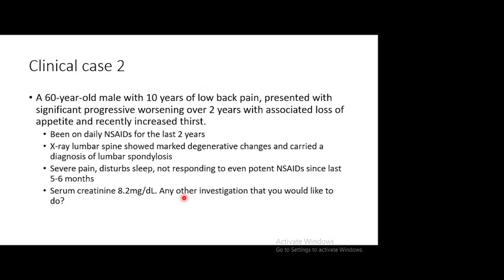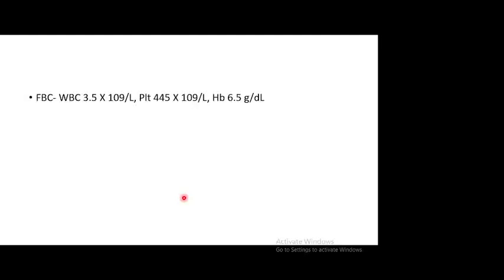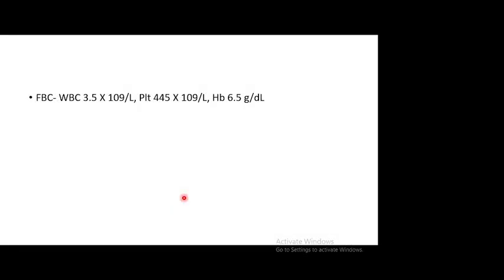His serum creatinine was 8.2 mg/dL. A full blood count showed white cell count 3.5, Hb 6.5, ESR 125 mm in the first hour, and serum calcium 3.4. The upper limit of ionized serum calcium is roughly 2.2 for most labs — anything above 3 you automatically think cancer, because that level of hypercalcemia is very uncommon with other causes. Above 3, think: is this malignant hypercalcemia?